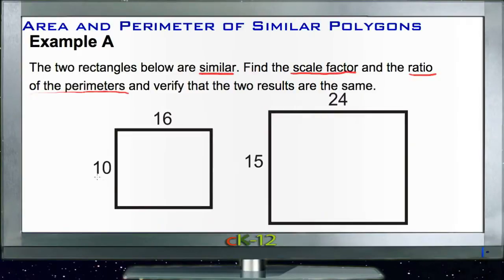Let's start by finding the scale factor. The scale factor would be calculated from any two sides, so we'll take the two corresponding sides that are on the left of each of these two figures. Our scale factor will be 10 out of 15, which of course reduces to 2 out of 3.